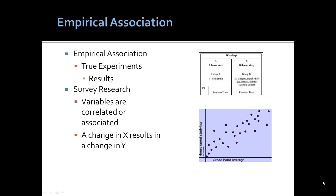Survey research is a little trickier. Here we see that the number of hours studying is related to grade point average. And we could assume that there is a causal relationship. But here, we have variables that are correlated or associated.